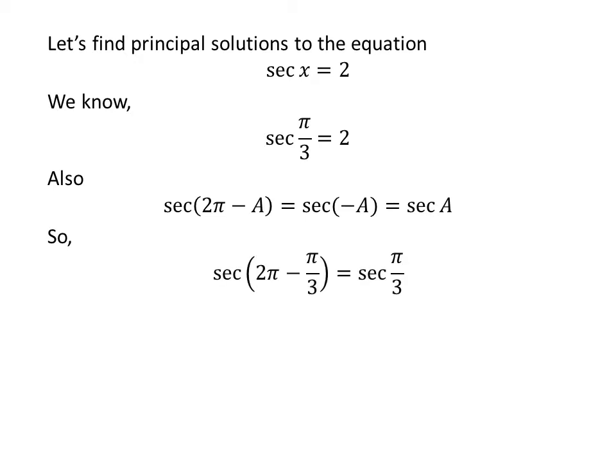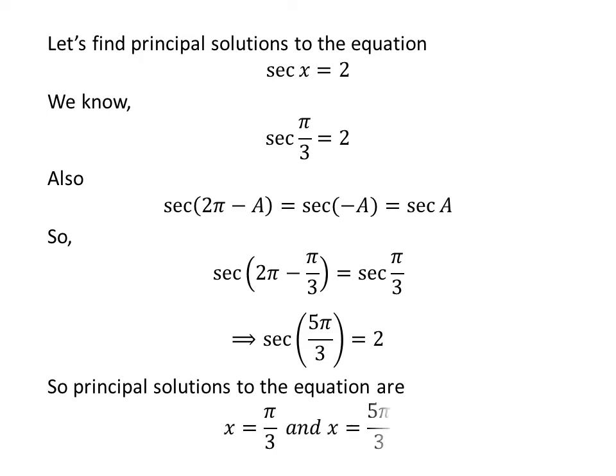Applying the above identity, secant of 2 times pi minus pi upon 3 is equal to secant of pi upon 3. Since 2 times pi minus pi upon 3 equals 5 times pi upon 3, we get secant of 5 times pi upon 3 is equal to 2. Therefore, the principal solutions to the equation secant of x equals 2 are pi upon 3 and 5 times pi upon 3.